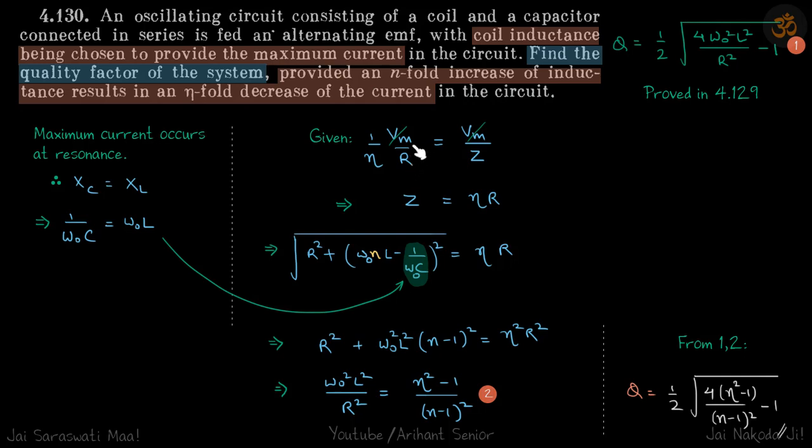at resonance we have the impedance as R, but if you change the inductance the impedance will again become Z. At resonance the maximum current was Vm by R, and it's given that when you change the impedance the new current is eta times less than the resonance current. So our given equation is this: